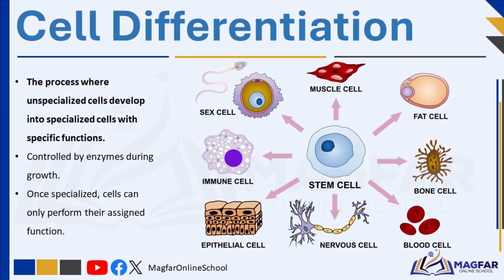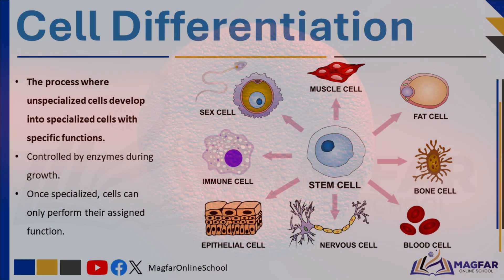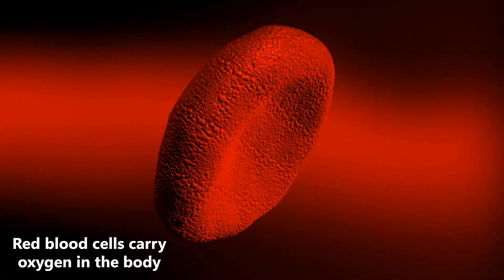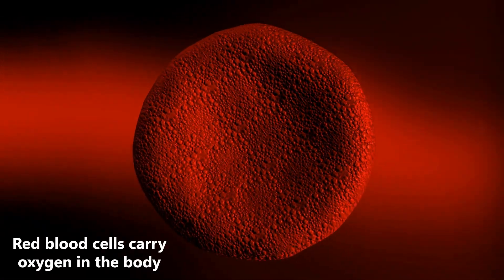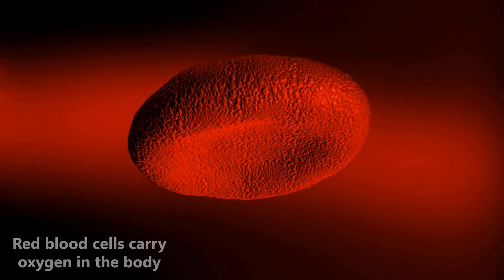Enzymes guide cells to develop in ways that make them different from one another, or specialized. This process, called differentiation, allows cells to become specialized for specific functions. In other words, cell differentiation is the process by which unspecialized cells develop into specific types of cells with distinct structures and functions. Once a cell is specialized, it can only perform a particular role, such as carrying oxygen, transmitting signals, or contracting for movement. This is why the body has different types of cells, each with a specific job.